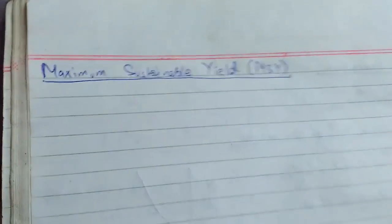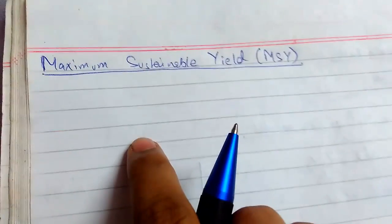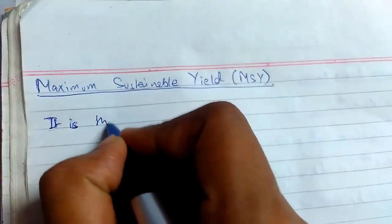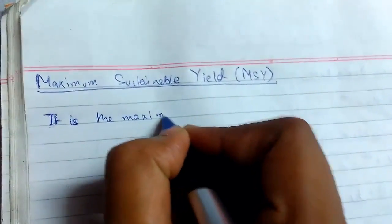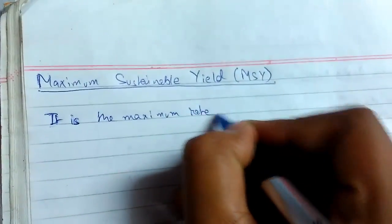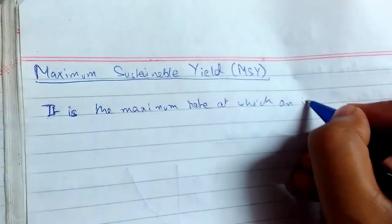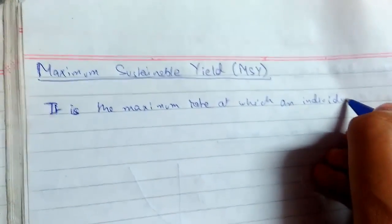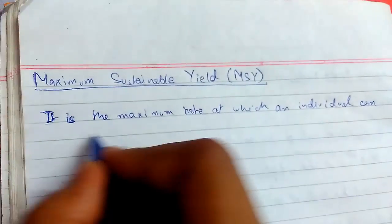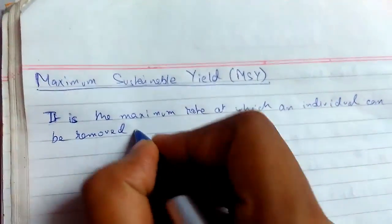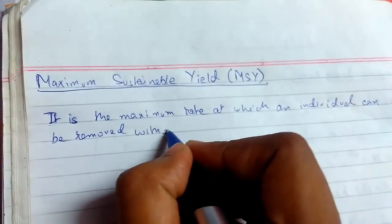Welcome back guys. Today we will be continuing population growth. So today we will be studying about maximum sustainable yield or MSY. It is the maximum rate at which an individual can be removed without reducing the population size.